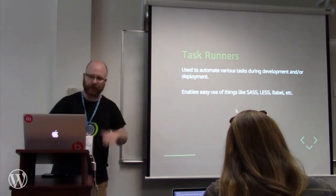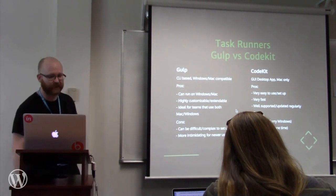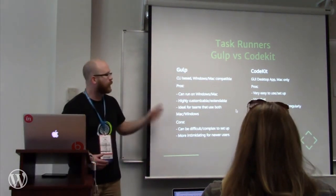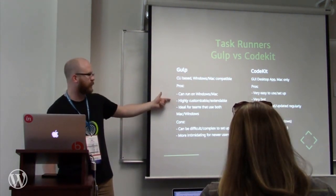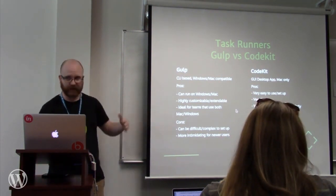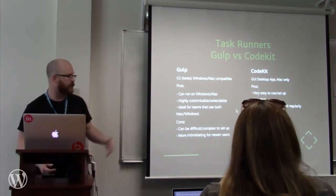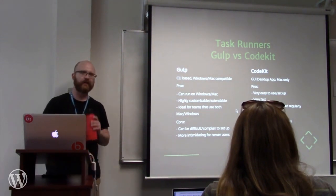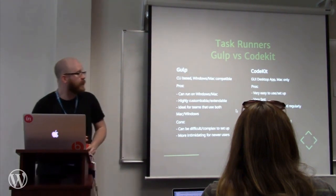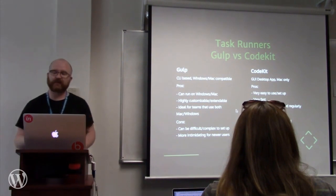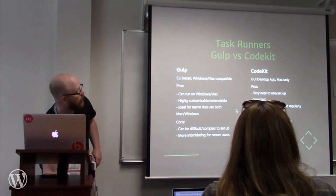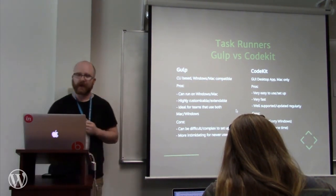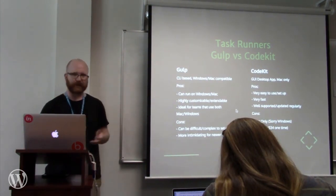Gulp is a CLI command-line application, while CodeKit is an actual desktop application. The pros of Gulp are that you can run it on anything, do whatever you want with it, and it's ideal for multi-platform teams with both Mac and Windows users — though it can be slightly difficult to set up and intimidating if the terminal scares you. CodeKit, on the other hand, is very easy to use, fast, and regularly updated with famously hilarious changelog notes. The con is it's Mac only, so choose based on your use case.